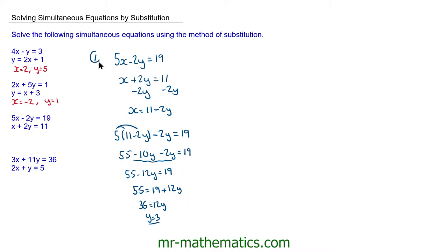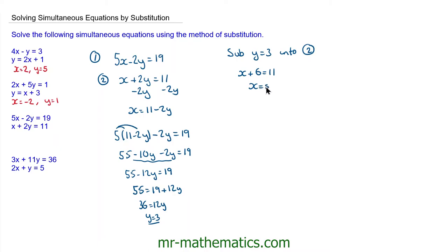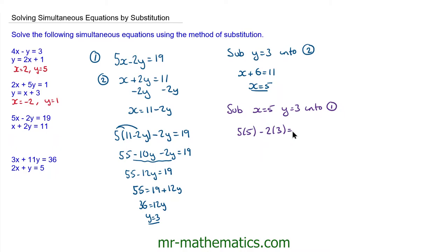So we'll label this equation 1 and this one equation 2. We'll substitute y equals 3 into equation 2. So we have x plus 2 lots of y — 2 lots of 3 makes 6 — is equal to 11. So x is equal to 5. And again, we can check by substituting x equals 5 and y equals 3 into equation 1: 5 lots of 5 minus 2 lots of y to make 19. Well, 25 take away 6 does make 19. So we know these are correct.